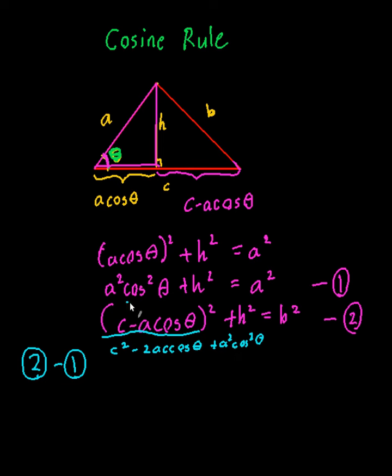When I go equation two minus equation one, the a² cos² θ terms will cancel out. So I should end up with c² - 2ac cos θ. The h² terms will disappear because they cancel each other out, equals b² - a².